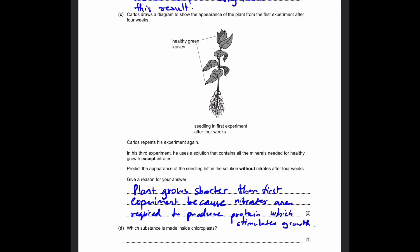Part D: Which substance is made inside chloroplasts? So, what is the product of photosynthesis? Glucose. You can also write carbohydrates since glucose is a carbohydrate. And oxygen is also accepted. That's our answer.